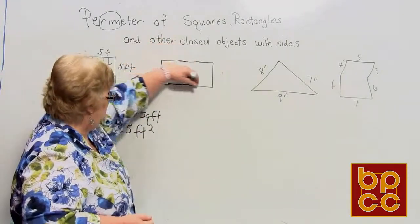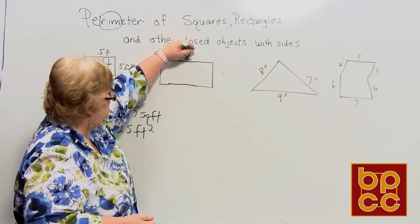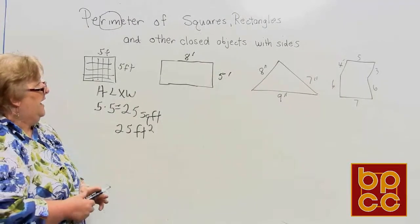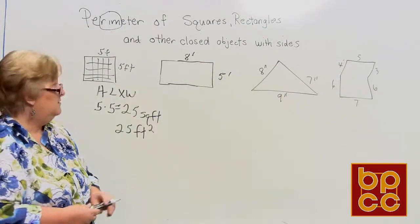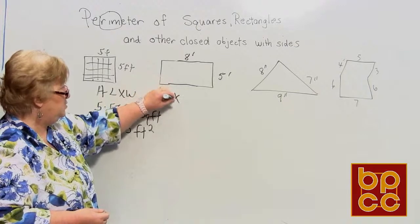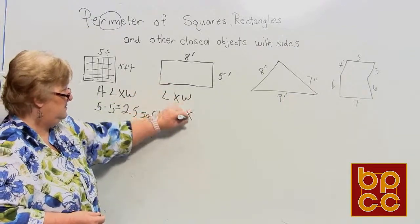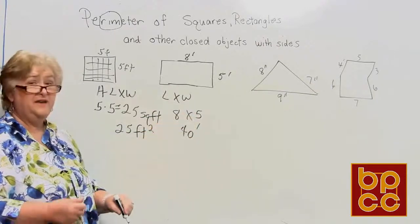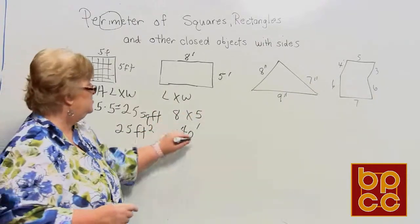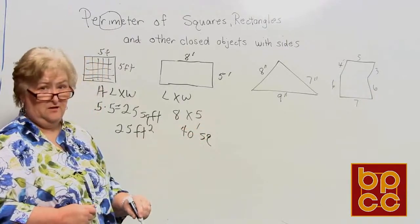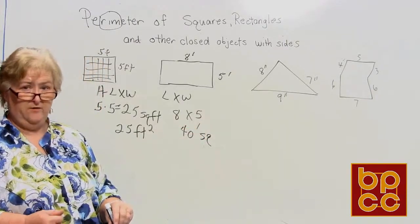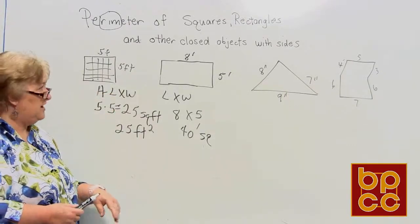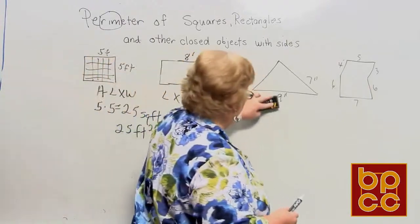Same with a rectangle: if we have an eight-foot by five-foot rectangle, we do length times width again — 8 times 5 equals 40 square feet, or 40 feet squared. Length times width works for both the square and the rectangle.